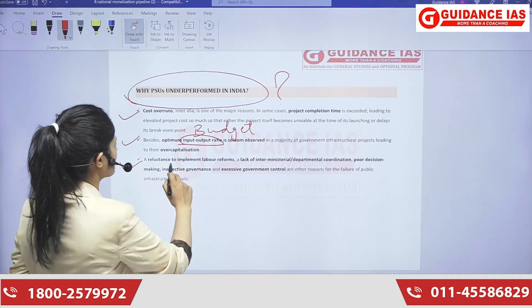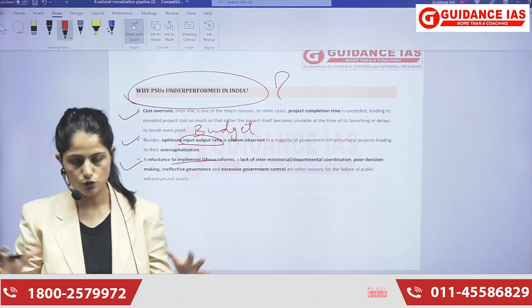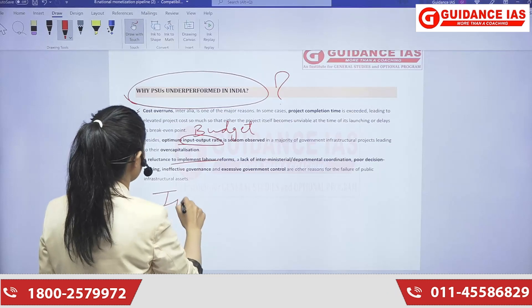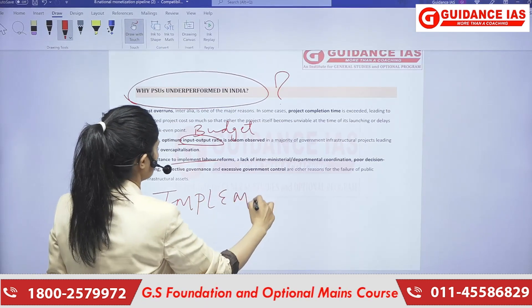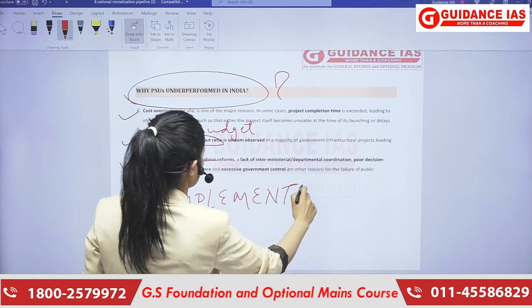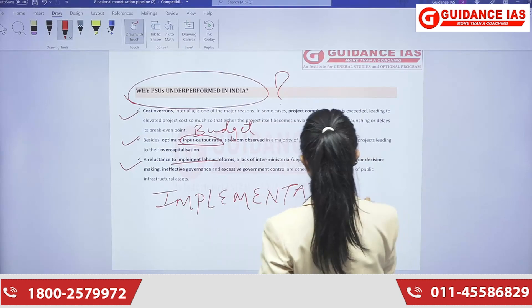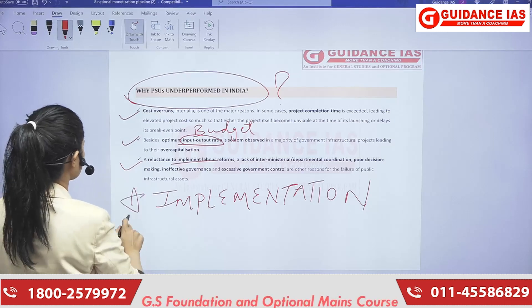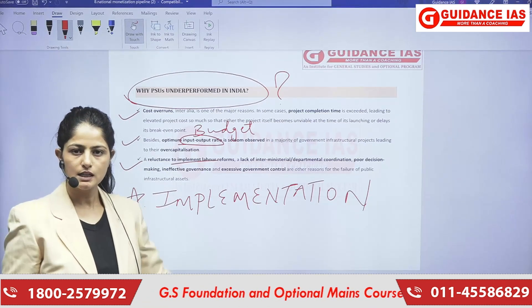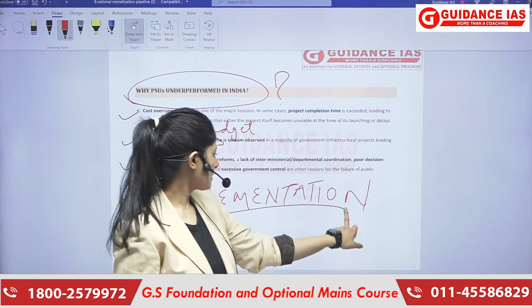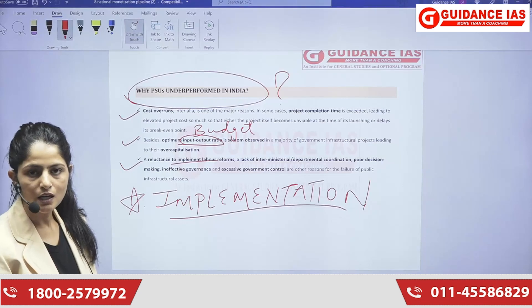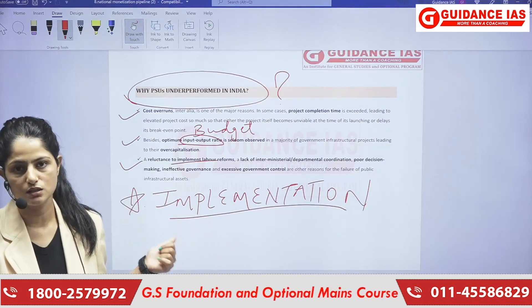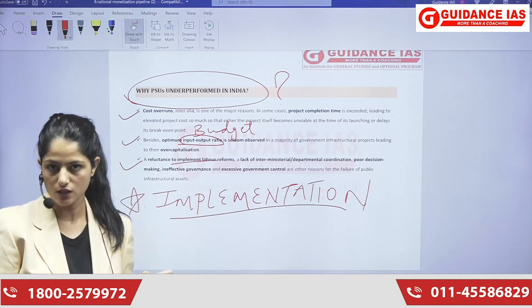We need to implement labor laws properly, and whatever ministries and departments are involved need better coordination. Implementation is something we are highly lacking. Any scheme, initiative, or project — the implementation part is crucial. Better execution is the need of the hour, and better implementation by all stakeholders is essential if we can hope for a better result.